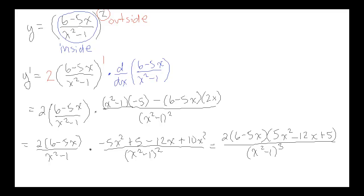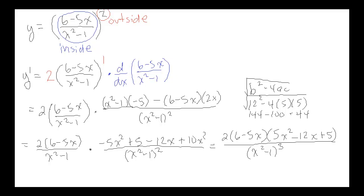This isn't going to be factorable. Using the discriminant b² − 4ac: b = −12, so b² = 144; and 4ac = 4 × 5 × 5 = 100. So the discriminant is 144 − 100 = 44. The square root of 44 is 2√11, which is not a whole number, meaning this is not factorable over the integers. So that would be our final answer: 2(6 − 5x)/(x² − 1) times (5x² − 12x + 5)/(x² − 1)³.